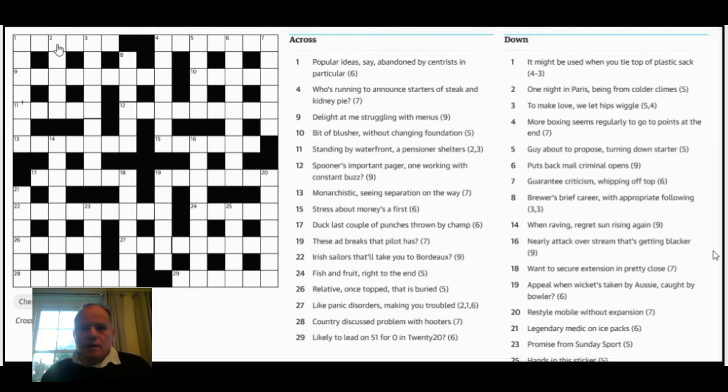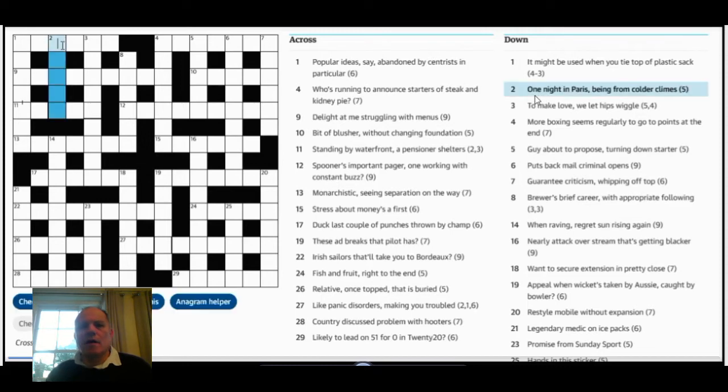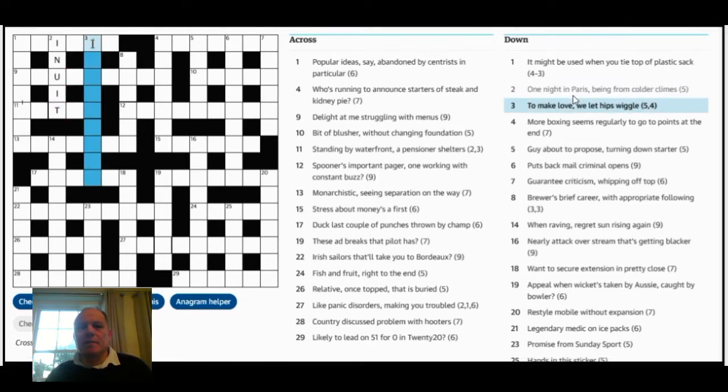I think I got two down at the end. One night in Paris being from colder climes, quite a nice clue. I have seen the makeup before though. So one is I and then night in Paris is a translation, so it's Nuit, and that gives you Inuit which is a being from colder climes, which is quite neat.